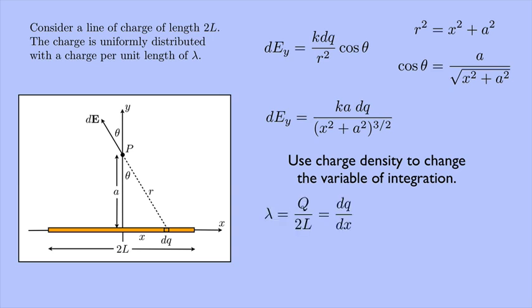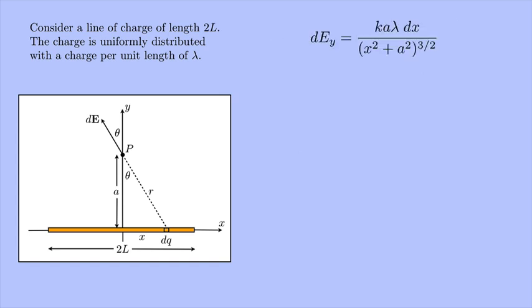Well, λ equals q over 2L, and that equals dq over dx, a little bit of charge over a little bit of the length. Okay, so that means that dq, a little bit of charge, equals λ dx. Great, now I can plug that in, and now I'm integrating with respect to dx. So here's my expression for dEy. I'm ready to integrate.